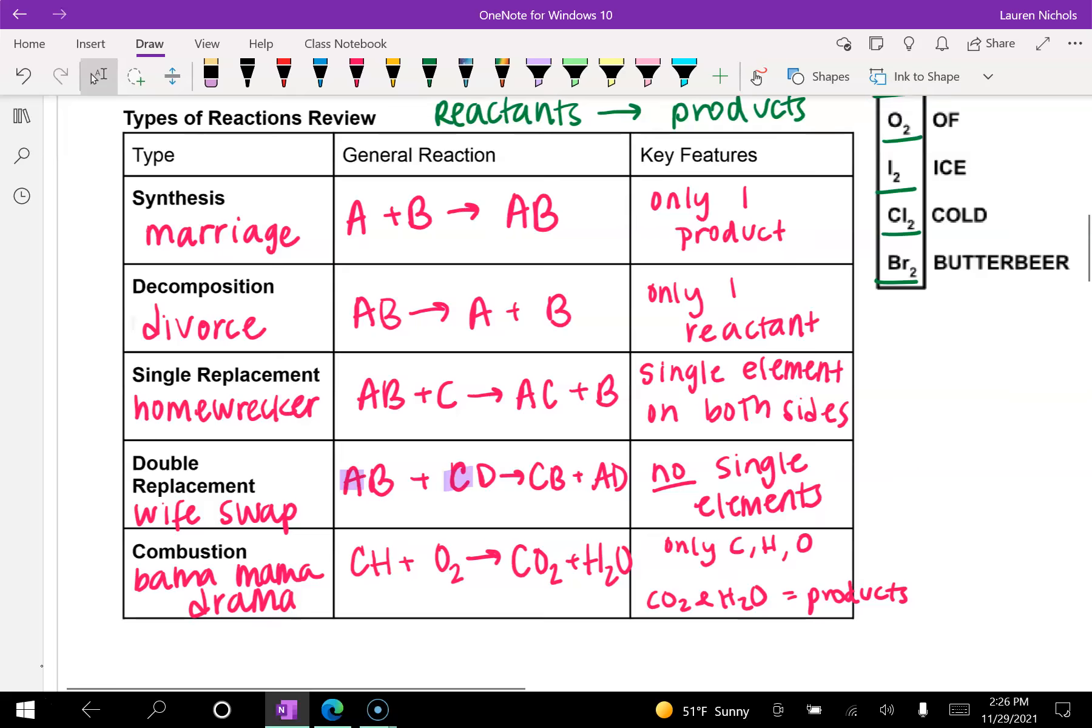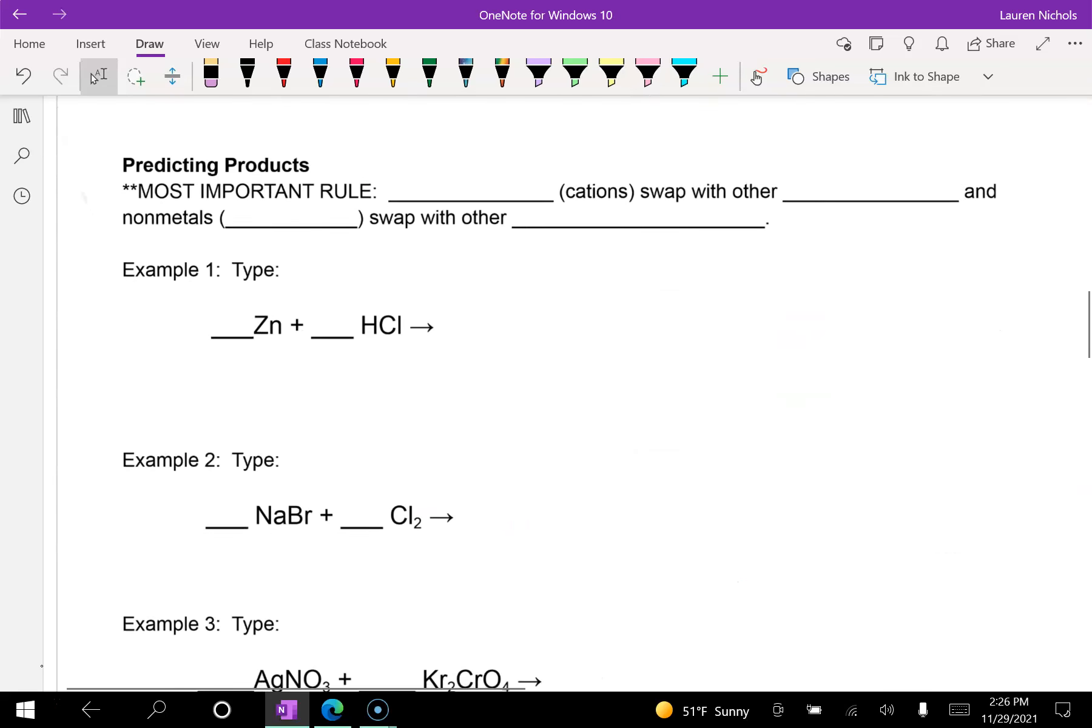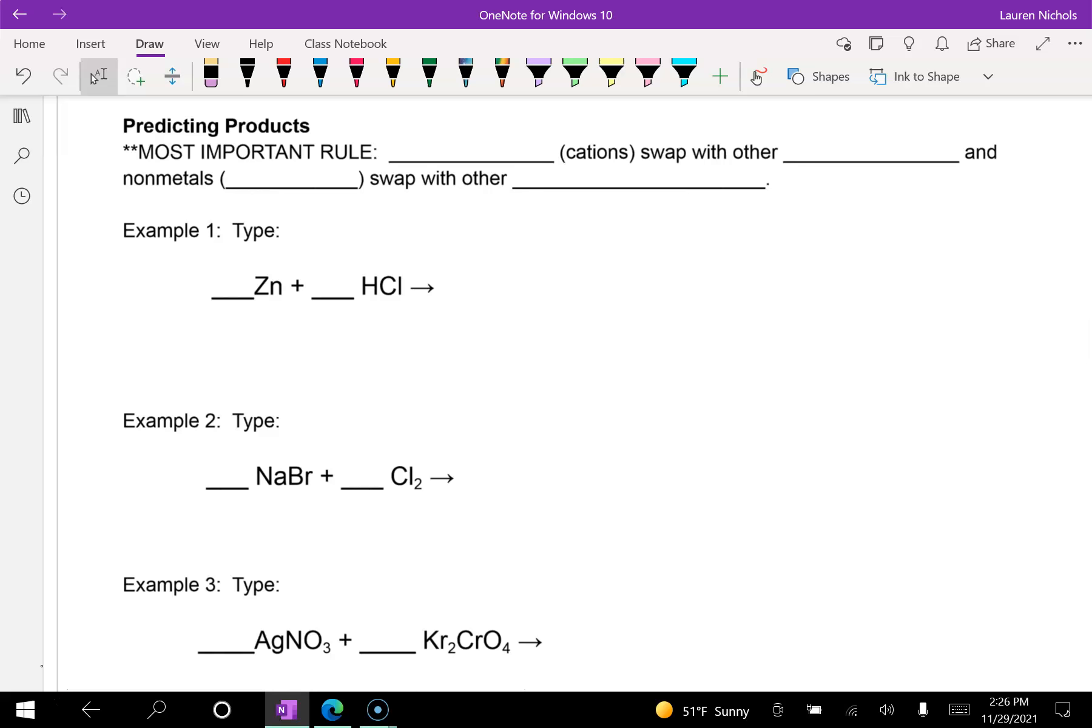And so these are types. So we're going to combine what we know about types, diatomic elements, and writing formulas. And we're going to actually use them to predict the products that will form. Now, when we're predicting, the most important rule is that metals, which are cations, remember cats have paws, so cations are positive, are going to swap with other metals, or other things that are positive.